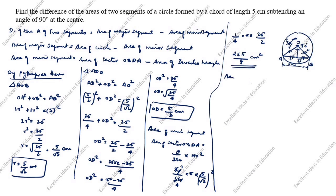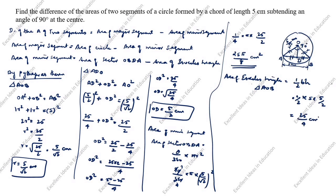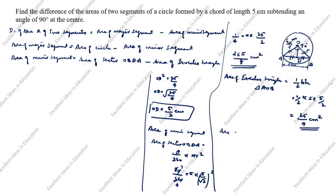Next, we will find the area of the isosceles triangle AOB. Area of isosceles triangle = 1/2 × base × height. Base AB = 5, height OD = 5/2. So area = 1/2 × 5 × 5/2 = 25/4 centimeter square. Area of minor segment = area of sector OBDA minus area of isosceles triangle = 25 pi/8 minus 25/4 centimeter square.